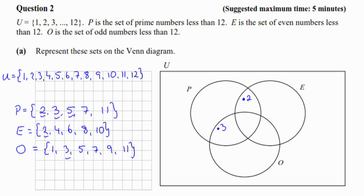5 is the same. It's in P and it's in O but it's not in E. 7 is the same. And 11 is the same. It's in P and it's in O.